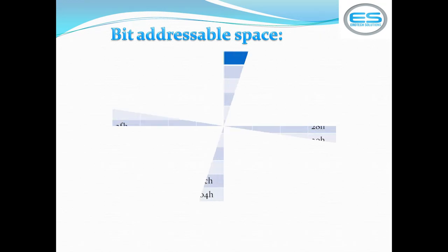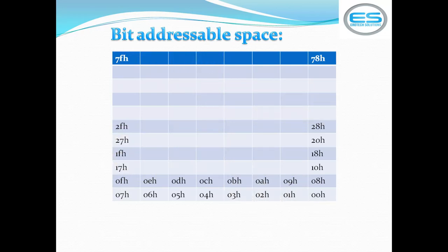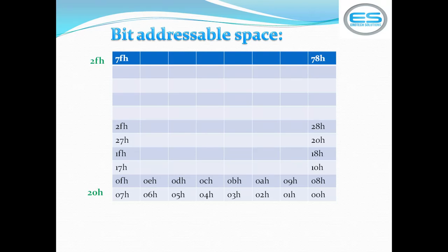The next section is bit-addressable space. There are 16 locations of bit-addressable space from 20h to 2Fh. The meaning of bit-addressable is that each location is divided into eight individual bit locations. So if your source content is a single bit, you can use these bit locations to store single-bit binary data. The microcontroller automatically stores information in bit locations based on the source content.